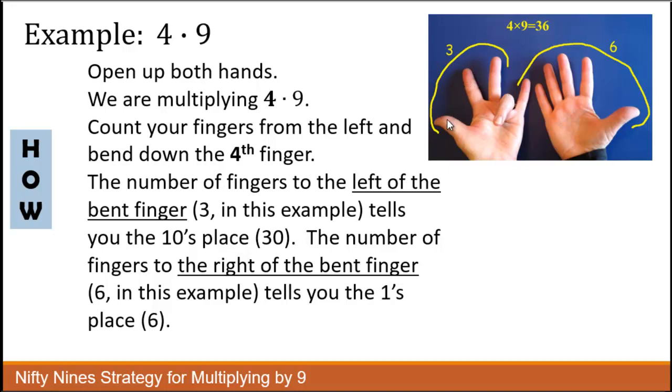You count the fingers to the left, which is 3, which means the answer is going to be 30-something. You count the fingers to the right, which is 6, which means there's going to be a 6 in the ones place, and the answer is 36.